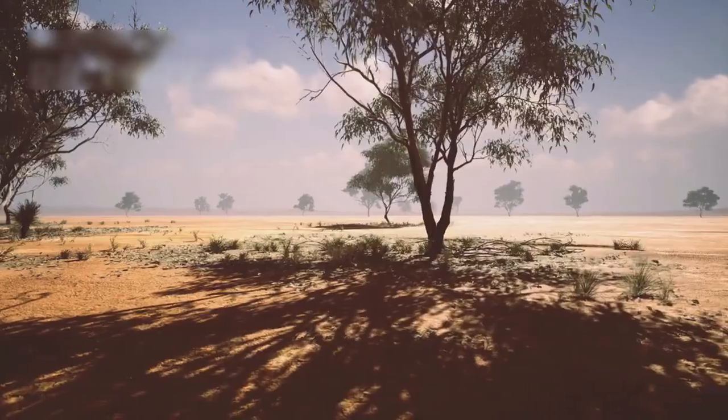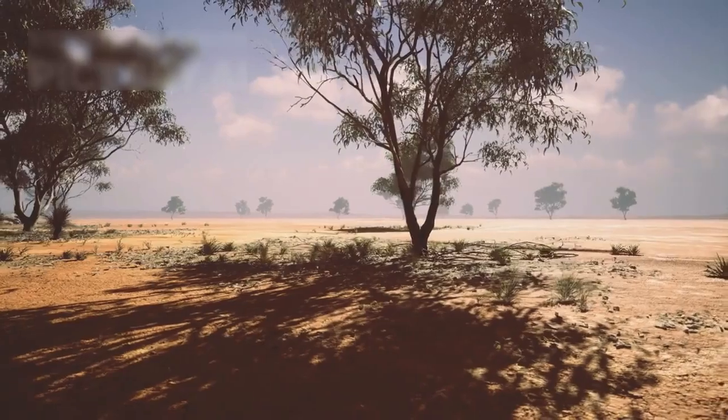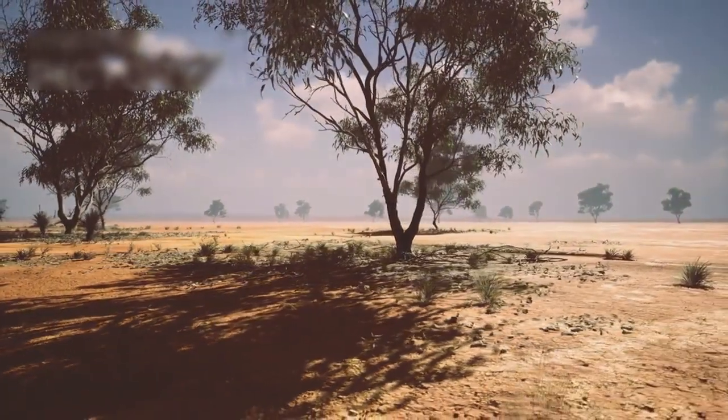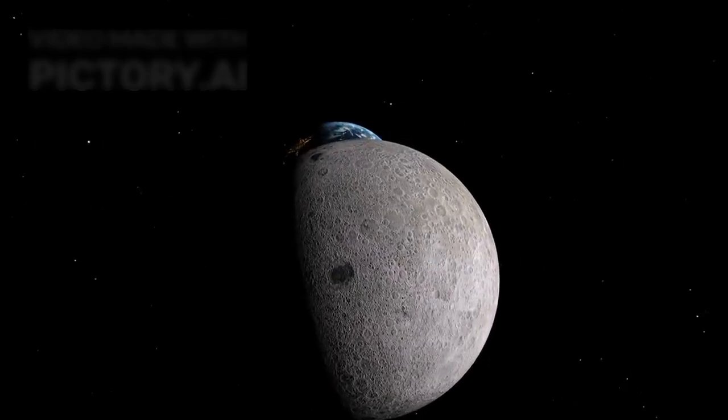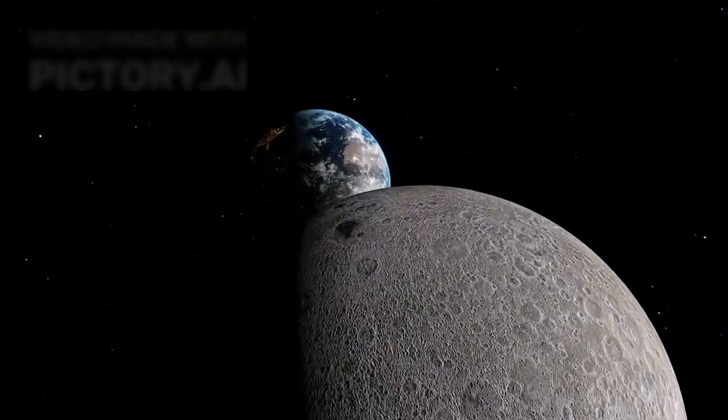Proxima b, in its contradictions, offers a mirror. It shows us how easily life's cradle could crack, how light can vanish, how shadows can overtake. Its existence is both hopeful and haunting, an echo of what might be.